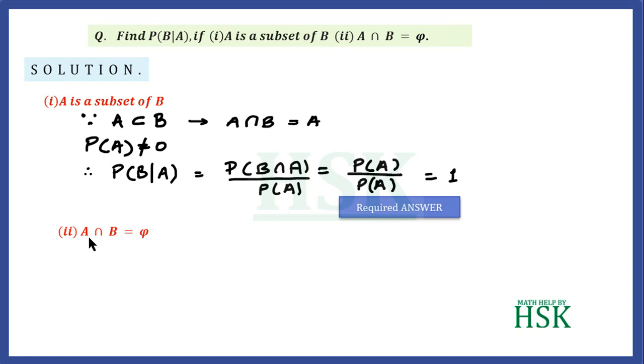In the second part, A intersection B is equal to phi. So A and B are two events such that they have no element common to them. Okay, so A intersection B is given to us as phi. So number of elements in A intersection B would be equal to 0. So probability of A intersection B would be equal to 0.